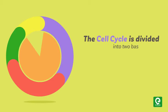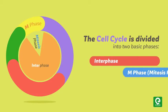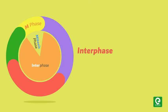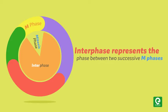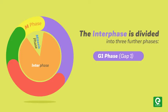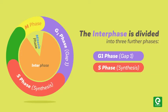The cell cycle is divided into two basic phases: interphase and M phase, also called the mitosis phase. Interphase represents the phase between two successive M phases. The interphase is divided into three further phases: G1 phase (Gap 1), S phase (Synthesis), and G2 phase (Gap 2).